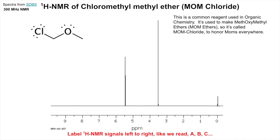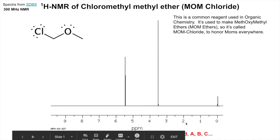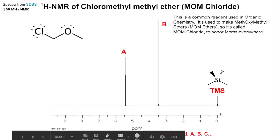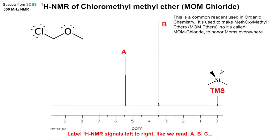Let's label the hydrogen NMR spectrum like we did before. I always want us to label hydrogen NMR signals with letters A, B, C from left to right. At zero, that's TMS - tetramethylsilane - our internal standard we use to set our spectrum to zero parts per million. This spectrum has a peak at about 3.5 parts per million relative to TMS.